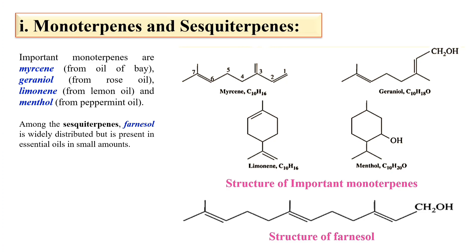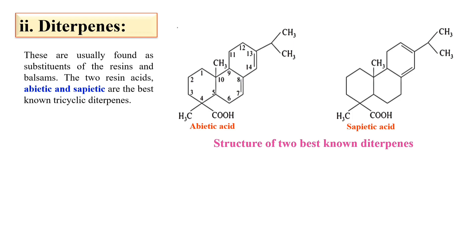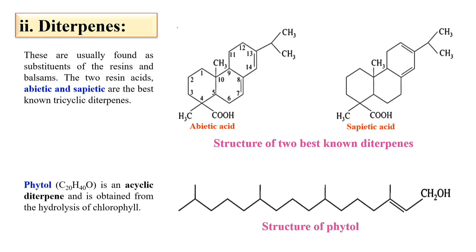Farnesol is an example of sesquiterpenes. Next, diterpenes. These are usually found in resins, and two examples of the diterpenes include abietic acid and sapietic acid, the structures of which are just in front of you. In case of acyclic structure — because abietic and sapietic are cyclic structures — the diterpenes also exist in acyclic form, an example of which is phytol.